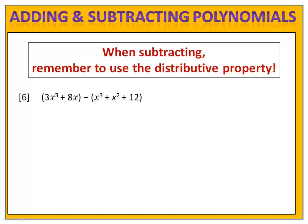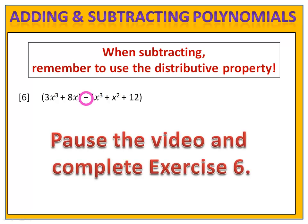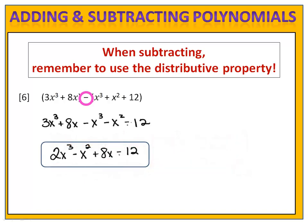In exercise 6, we once again have subtraction. Remember, we have to distribute that subtraction sign as a negative. Please pause the video here and complete exercise 6. In this exercise, we have 3x to the third plus 8x. We distributed the minus as a negative, so we have minus x to the third minus x squared minus 12. Combining like terms, we end up with 2x to the third minus x squared plus 8x minus 12.